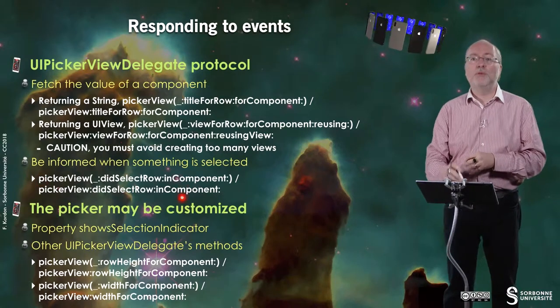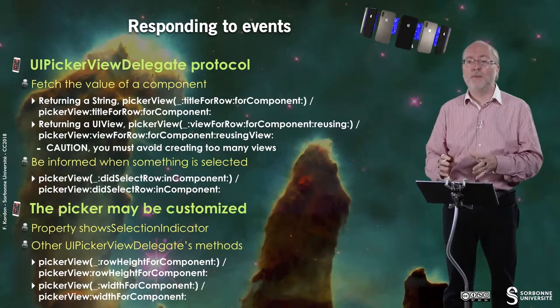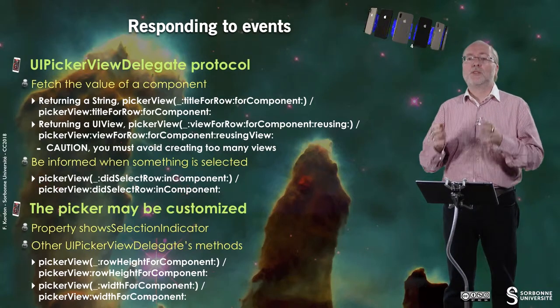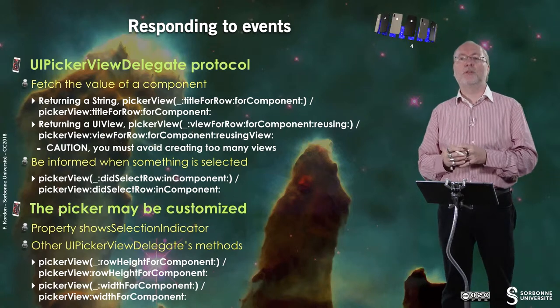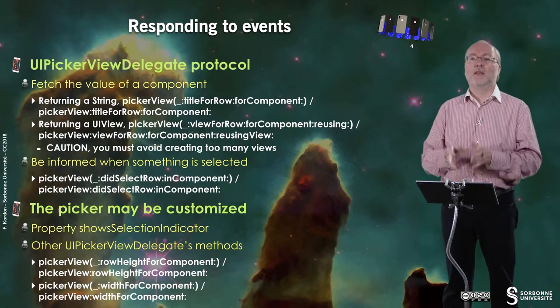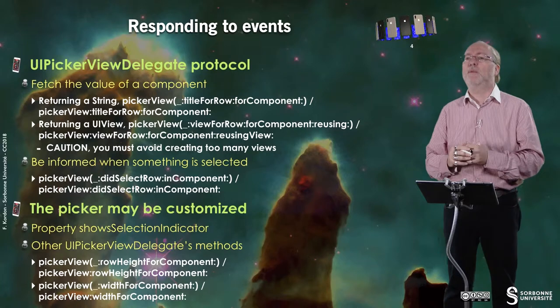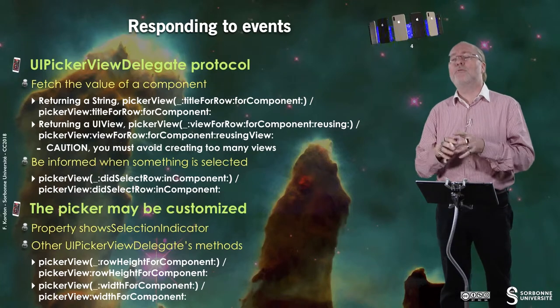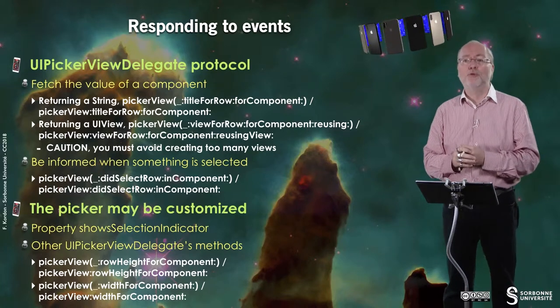It is important to be notified when something is selected. The method `didSelectRow:inComponent:` — shown here in Swift and below in Objective-C — gives you the row number and the component number for which the value changed. The UI Picker View itself is always provided as the first parameter.